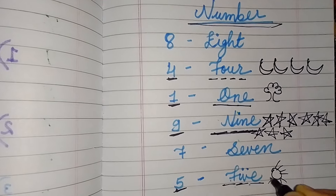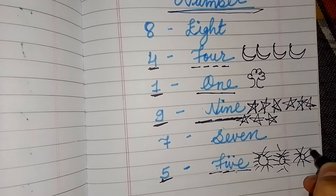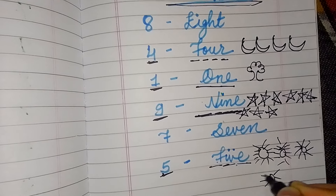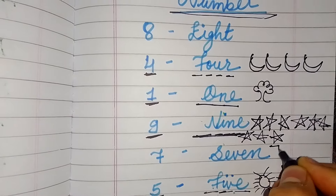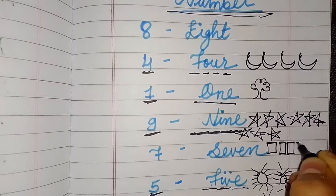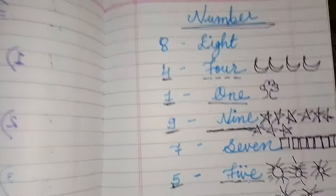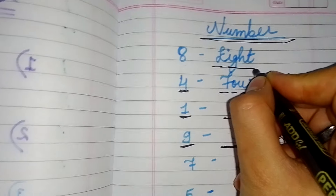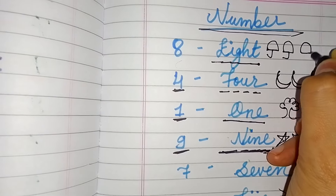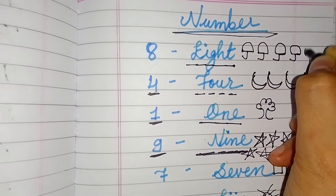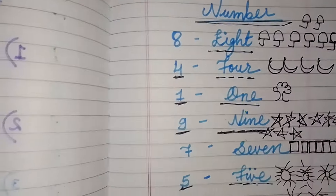So we'll be making five suns: one, two, three, four, five. Now seven — we'll be making seven boxes: one, two, three, four, five, six, seven. Number eight — E-I-G-H-T — eight. We'll be making eight umbrellas: one, two, three, four, five, six, seven, eight.